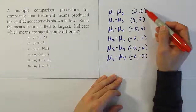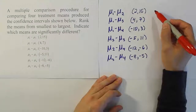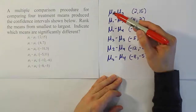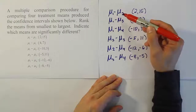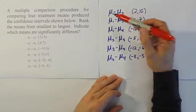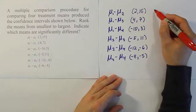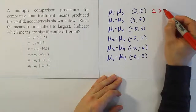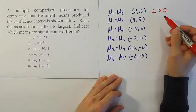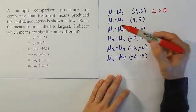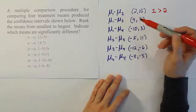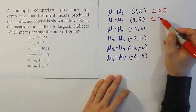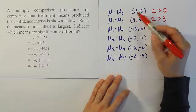If the interval is positive, the first mean is the bigger mean, because subtracting two positive numbers and getting a positive result means the first number is larger. So for mean 1 minus mean 2, the interval is positive, meaning mean 1 is greater than mean 2. For mean 1 minus mean 3, the interval goes from 4 to 7 — it's entirely positive — so mean 1 is significantly bigger than mean 3.